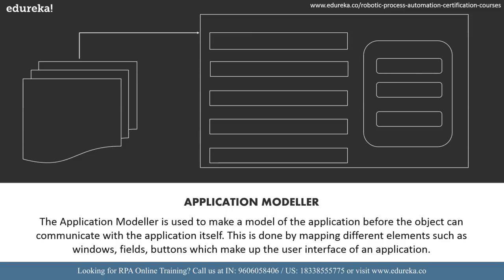The application modeler is used to make a model of the application before the object can communicate with the application itself. This is done by mapping different elements such as windows, fields, and buttons which make up the user interface of an application. The process of identifying different elements is known as spying. Once an element is spied, a unique profile is created to ensure that the application modeler can locate it.